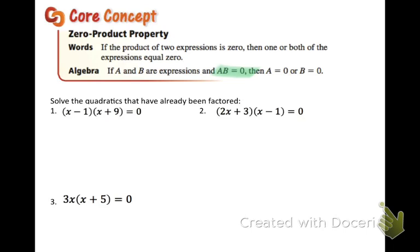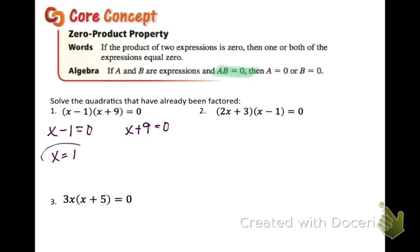Using that thought, for number one we have one blob times another blob and it equals zero. So one of those two blobs has to equal zero. We are going to set each of them equal to zero: x minus one equals zero and x plus nine equals zero, and we are going to solve. Adding the one over we get x equals one, and subtracting the nine over we get x equals negative nine.